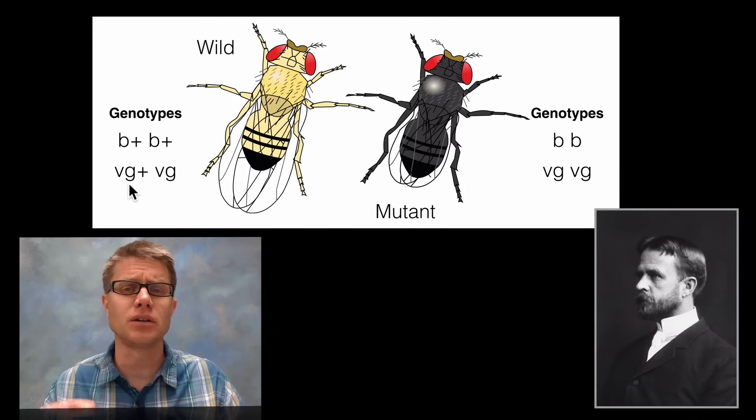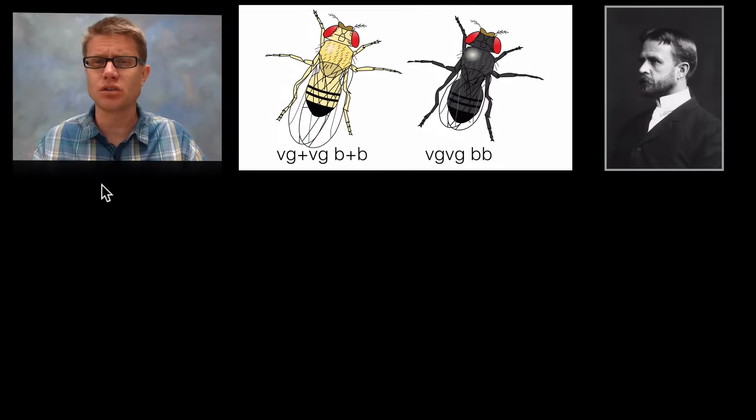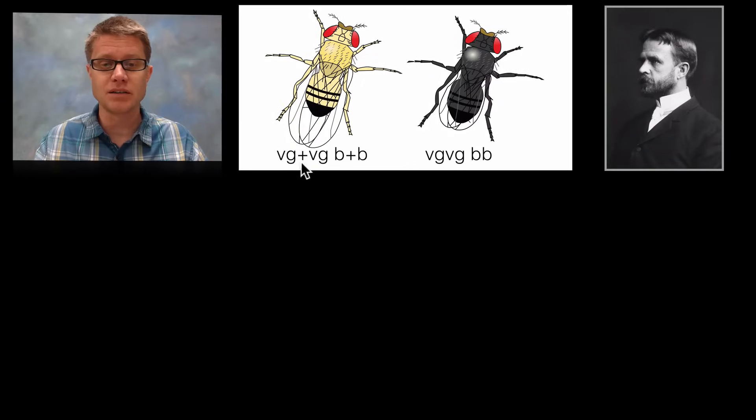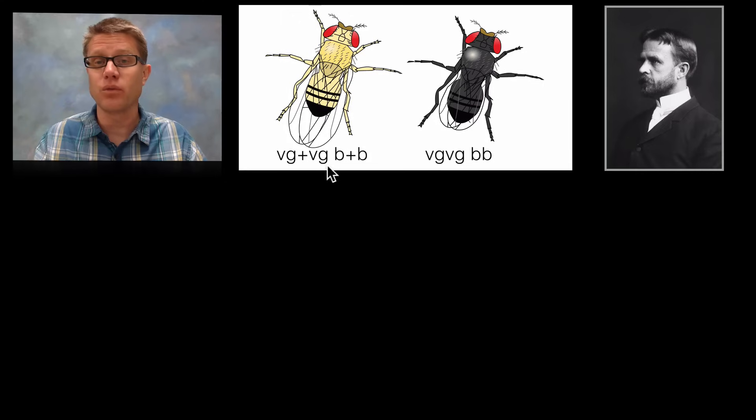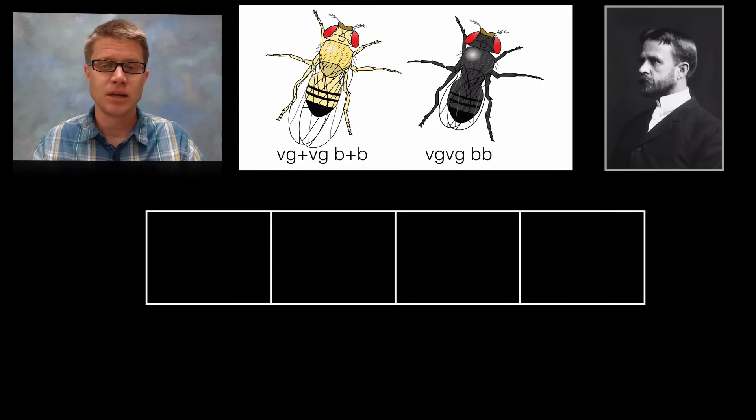Let me show you the quintessential cross that Morgan did that was so puzzling. He has a normal wild type on the left but it's hybrid for both of these genes. You can think of this as like the F1 generation. Then he's simply doing a test cross with it, crossing it with a mutant fly that's mutant and homozygous recessive for both of those traits. Morgan understood the work of Mendel, so he set up his Punnett square like this. On the top he's going to show all the possible gametes that we could get from this one parent.